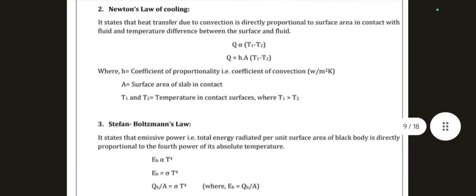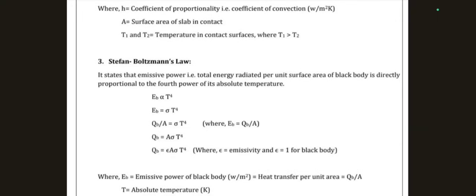Newton's law of cooling states that heat transfer due to convection is directly proportional to the surface area in contact with the fluid and the temperature difference between the surface and the fluid. Mathematically: Q ∝ A·(T1−T2), and removing proportionality: Q = H·A·(T1−T2), where H is the coefficient of convection, A is the surface area of the slab in contact, and T1, T2 are the temperatures at the contact surface.